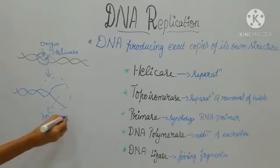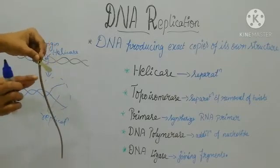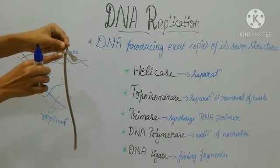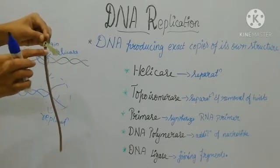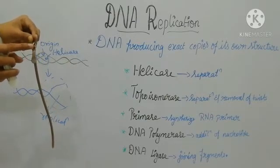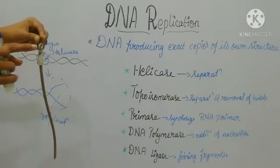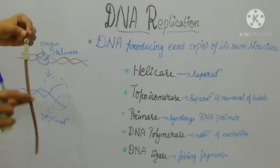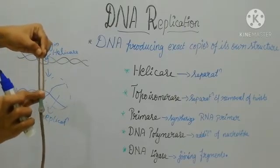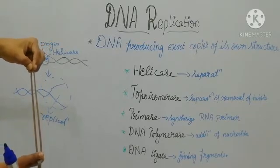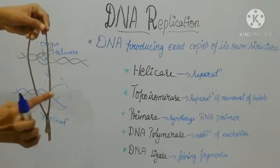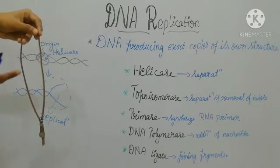The function of helicase can be compared to the working of a zip. We can take this zip: this area represents the DNA double strand, and this point is the origin of replication. This part represents the helicase enzyme. When helicase moves along the double strand DNA, the double strand starts to open — just like a zip opening. So the helicase enzyme's role is like this: the parent DNA separates into two single strands.